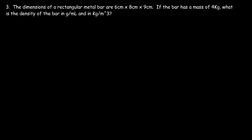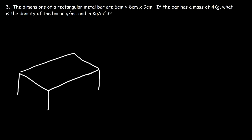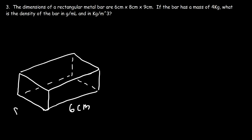Number 3. The dimensions of a rectangular metal bar are 6 centimeters by 8 centimeters by 9 centimeters. If the bar has a mass of 4 kilograms, what is the density of the bar in grams per milliliter and in kilograms per cubic meter? So let's draw a picture. We have a length of 6 centimeters, a width of 8 centimeters, and a height of 9 centimeters.